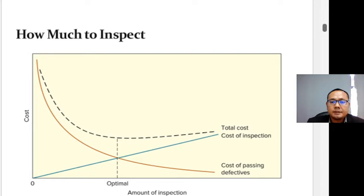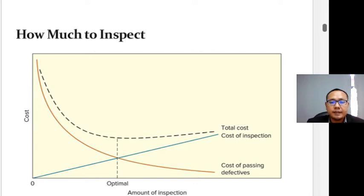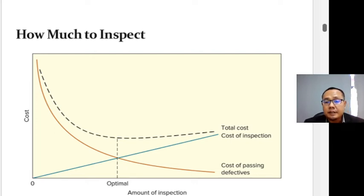The traditional goal was to minimize the sum of these two costs. In other words, it may not pay to attempt to catch every defect, particularly if the cost of inspection exceeds the penalties associated with letting some defects get through. Current thinking is that every reduction in defective output reduces cost, although not primarily through inspection.